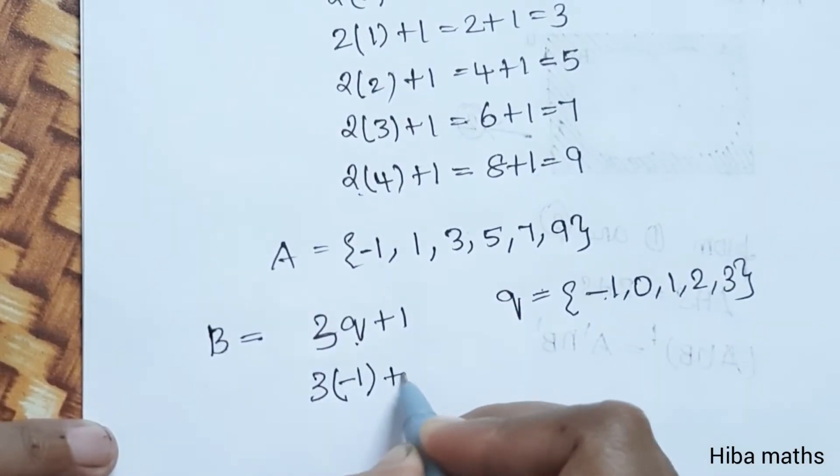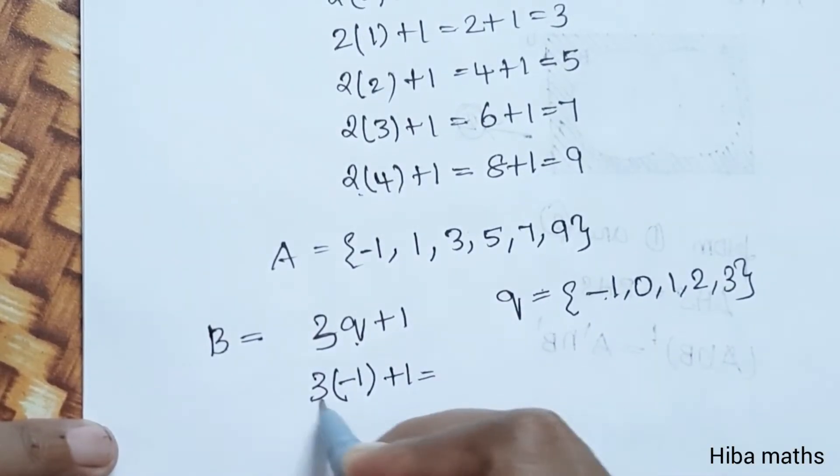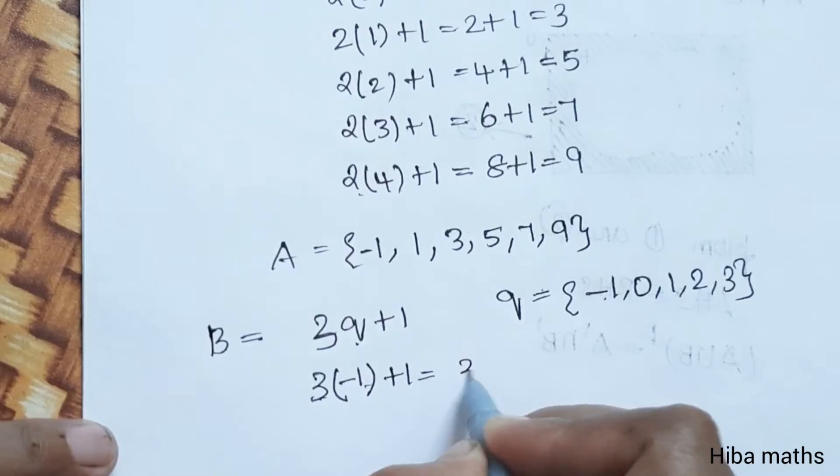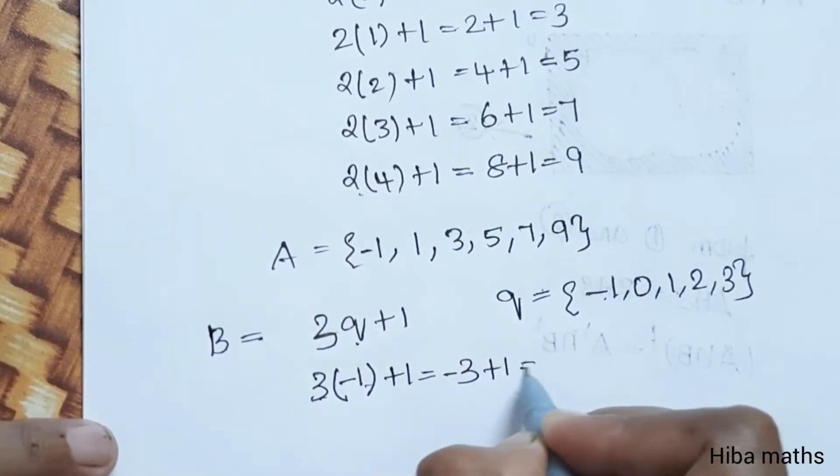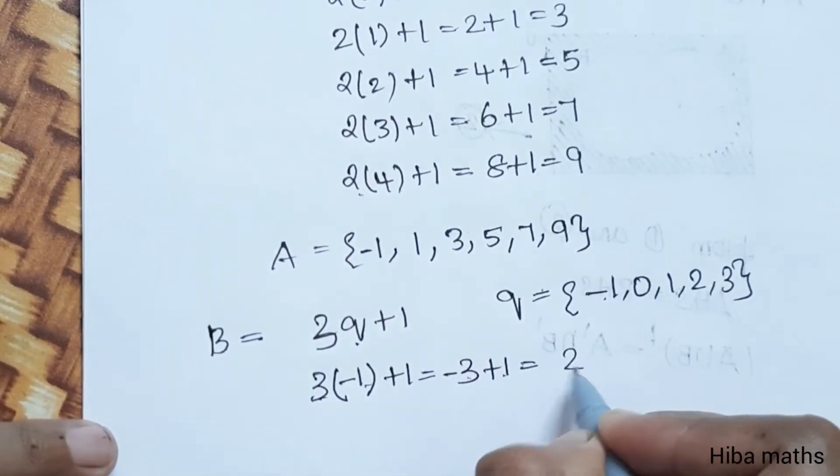B is equal to: when Q = -1, 3 times -1 plus 1 = -3 plus 1 = -2. So computing B values by substituting Q into 3Q plus 1.